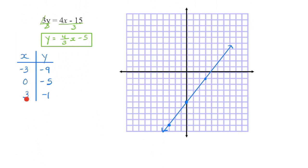I can choose anything for x. If I look at the denominator I can see that it's a three, so I want points I can quickly do mentally. If I put in negative three — four-thirds times negative three minus five — these divide out to give negative four, and negative four minus five gives me negative nine. If I substitute zero in for x, zero times anything makes that term gone, leaving me with negative five. And with positive three, that cancels with the denominator — four minus five gives me negative one. I've gone ahead and plotted those points.